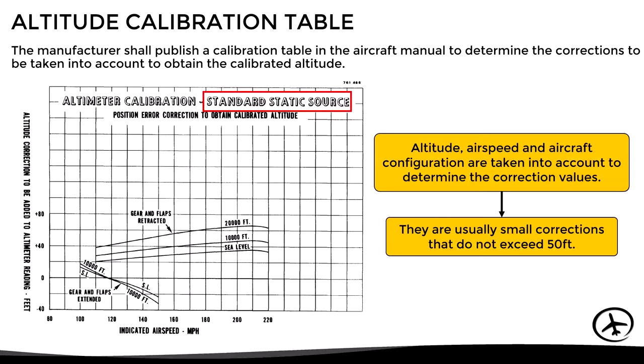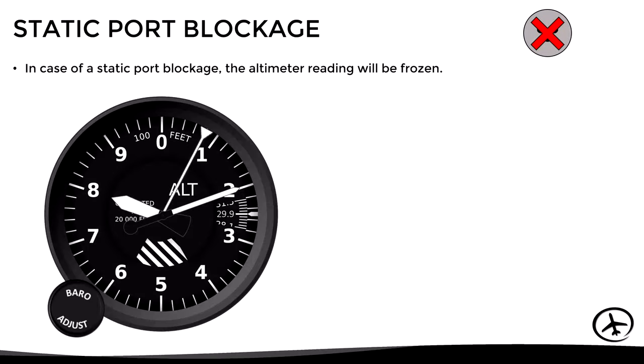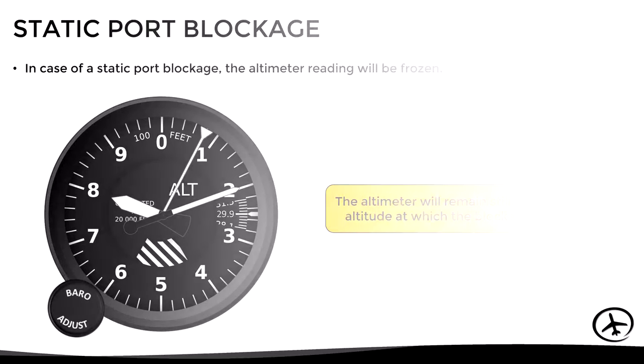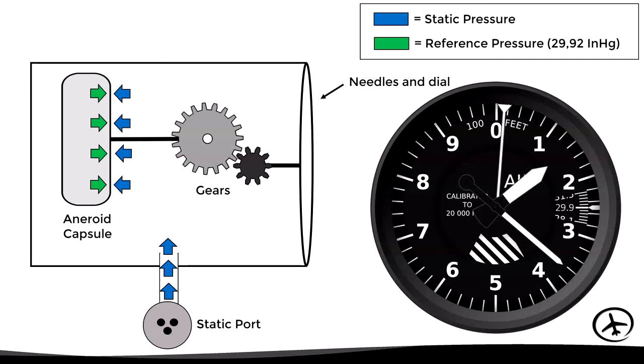But what happens if the static port gets blocked? In this case, the altimeter reading will freeze. Regardless of subsequent changes in altitude, the instrument needles will be frozen indicating the altitude at which the static port got blocked. When the static port is blocked, the static pressure inside the instrument case becomes trapped and remains constant, so the aneroid capsule cannot expand or contract, keeping the needles frozen.